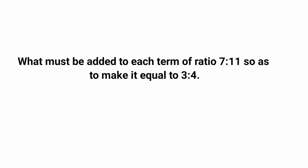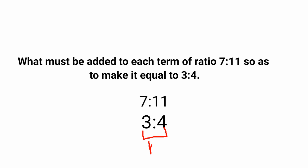Next question: what must be added to each term of ratio 7:11 so as to make it equal to 3:4? We have ratio 7:11 and by adding a particular value we get 3:4. The difference between the present and new ratio for the first number is 7 minus 3, which is 4, and for the second it is 11 minus 4, which is 7 — these are not equal. To make the differences equal, multiply the first ratio by the difference of the second ratio: 4 minus 3 equals 1, so the ratio stays 7:11.